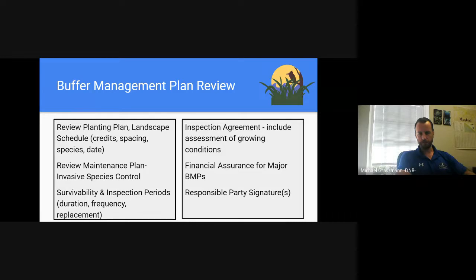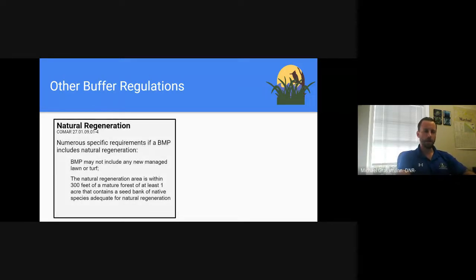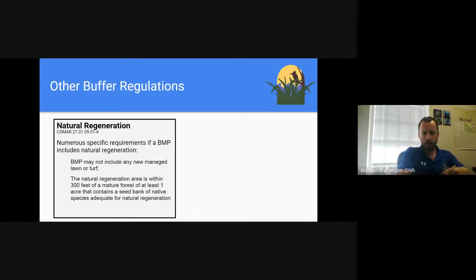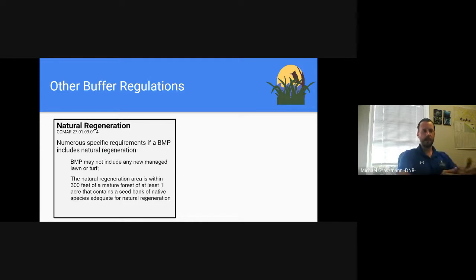Natural regeneration can be counted as a buffer management plan, but it has numerous and specific requirements that must be met. It cannot include any new or managed turf. The natural regeneration area must be within 300 feet of a mature forest of at least one acre that contains a seed bank of native species adequate for natural regeneration. There must be financial assurance to cover the cost of planting an equivalent area. There's also approximately a five-year date of approval attached. If you see this on a site plan, highly recommend you reach out to us or our science advisor for guidance.